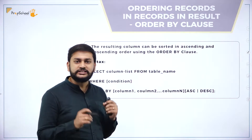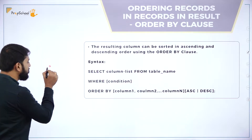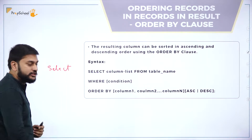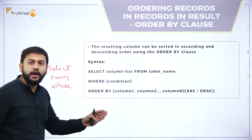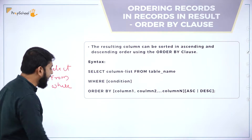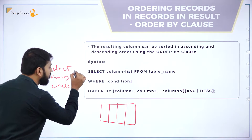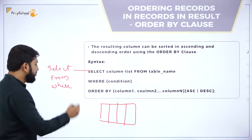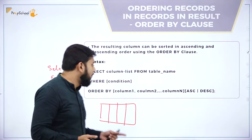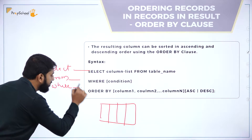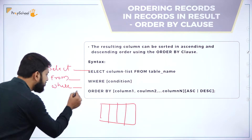Why do we have the ORDER BY clause? We have already studied the SELECT clause, FROM clause, and WHERE clause. In the SELECT clause, I specify which columns I want from the table. In the FROM clause, I specify from which table to select those columns.